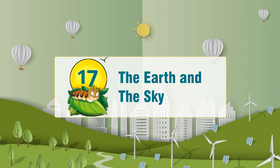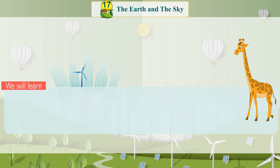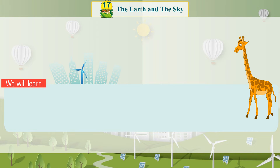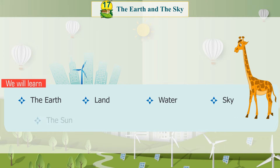Chapter 17: The Earth and the Sky. We will learn about the earth, land, water, sky, the sun, the moon, and the stars.